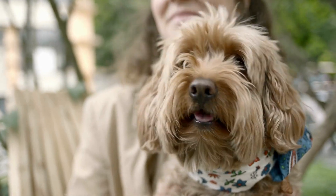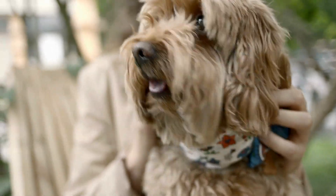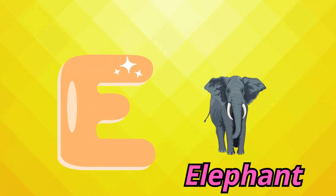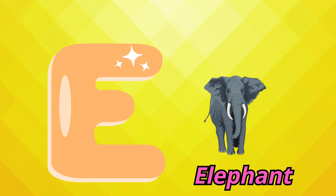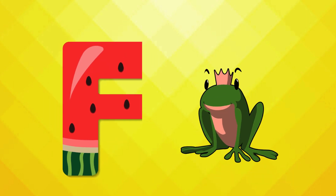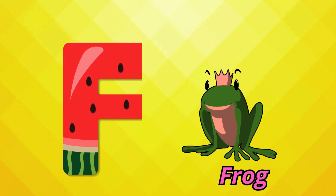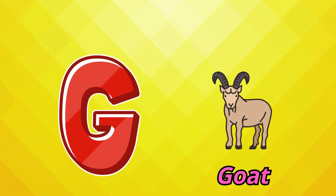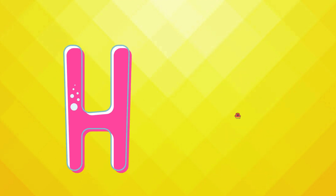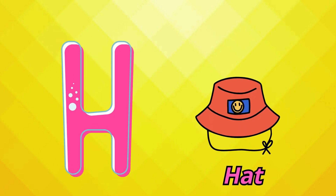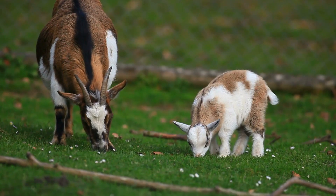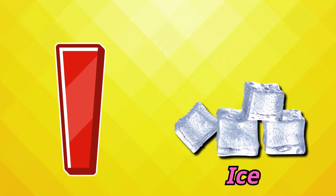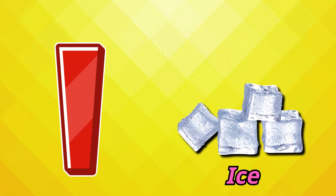Dum-dee-da-dum-dee-dum. E is for elephant, e-e-elephant. F is for frog, f-f-frog. G is for goat, g-g-goat. H is for hat, ha-ha-hat.